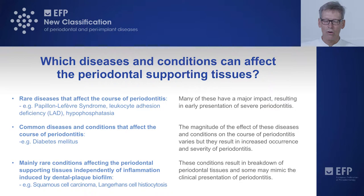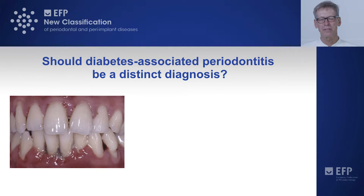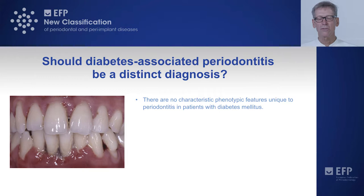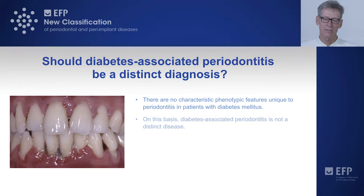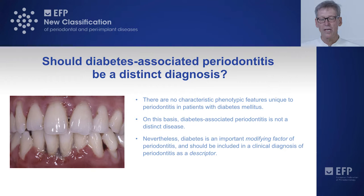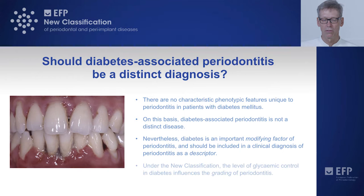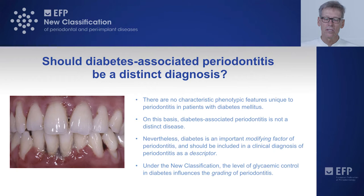Question three: should diabetes-associated periodontitis be a distinct diagnosis? The consensus was that there are no characteristic phenotypic features unique to periodontitis in patients with diabetes mellitus. On this basis, diabetes-associated periodontitis is not a distinct disease. Nevertheless, diabetes is an important modifying factor of periodontitis and should be included in a clinical diagnosis as a descriptor. Under the new classification, the level of glycemic control in diabetes influences the grading of periodontitis.